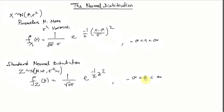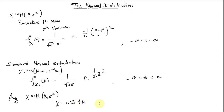A very useful fact about normal distributions is that any random variable which is normally distributed with mean mu and sigma squared can be written as a transformation of the standard normal random variable Z. That transformation is sigma times Z plus mu, where sigma is greater than 0 and mu can be any real number. We can use this relationship to find the expected value of X, variance of X, and moment generating function of X if we know the expectation, variance, and MGF of the standard normal random variable Z.